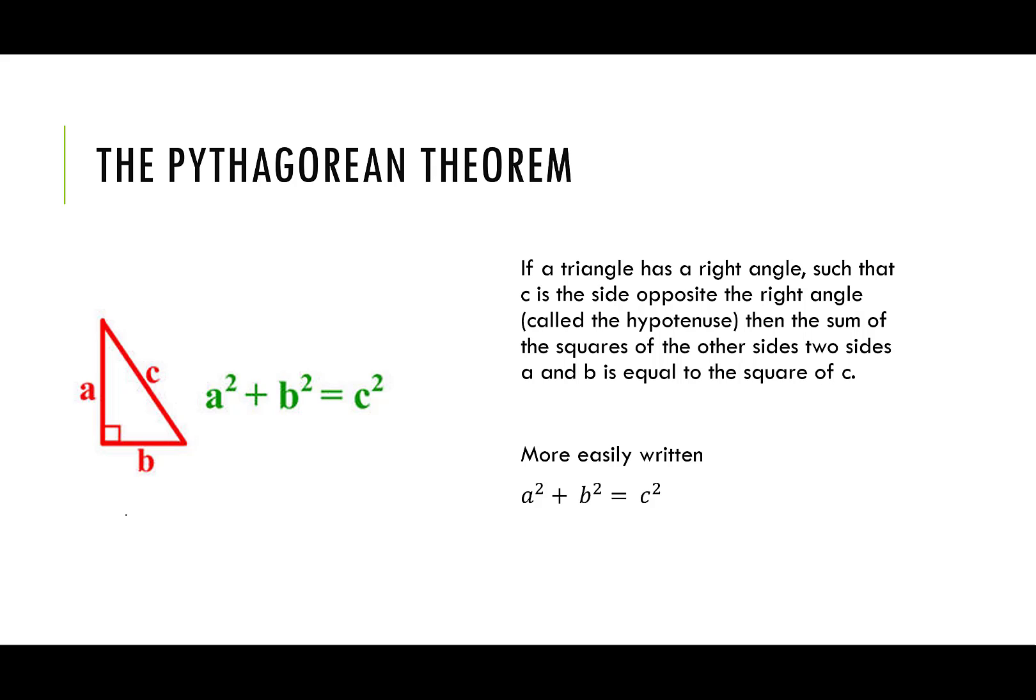Super important that you pay attention here that C is the longest side, and it will be opposite the right angle. Then the sides, A and B, you could write those either way. It doesn't matter if you call A the height or if you call B the height, as long as those are the two other sides.